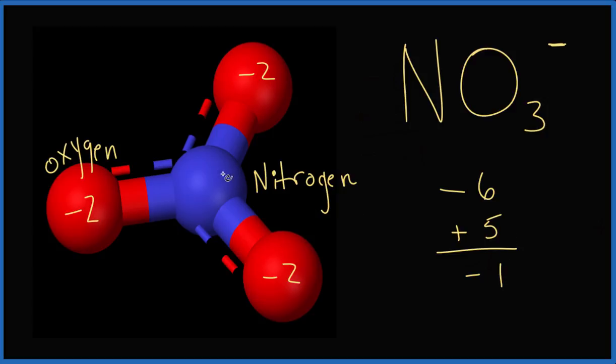That tells us that the oxidation number on the nitrogen is going to be plus five. This is Dr. B with the oxidation number for NO3 minus, the nitrate ion. Thanks for watching.